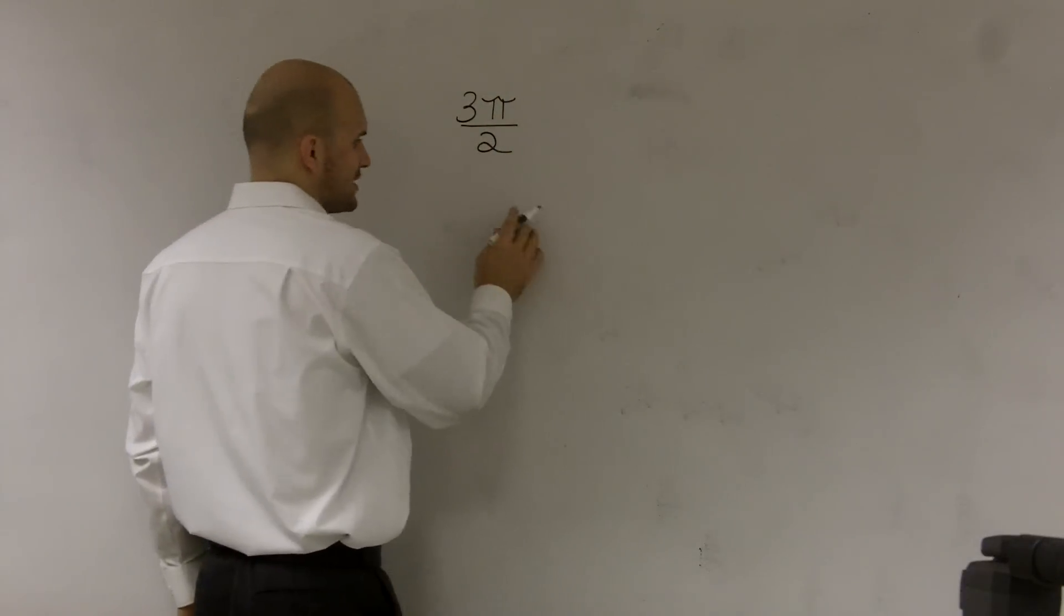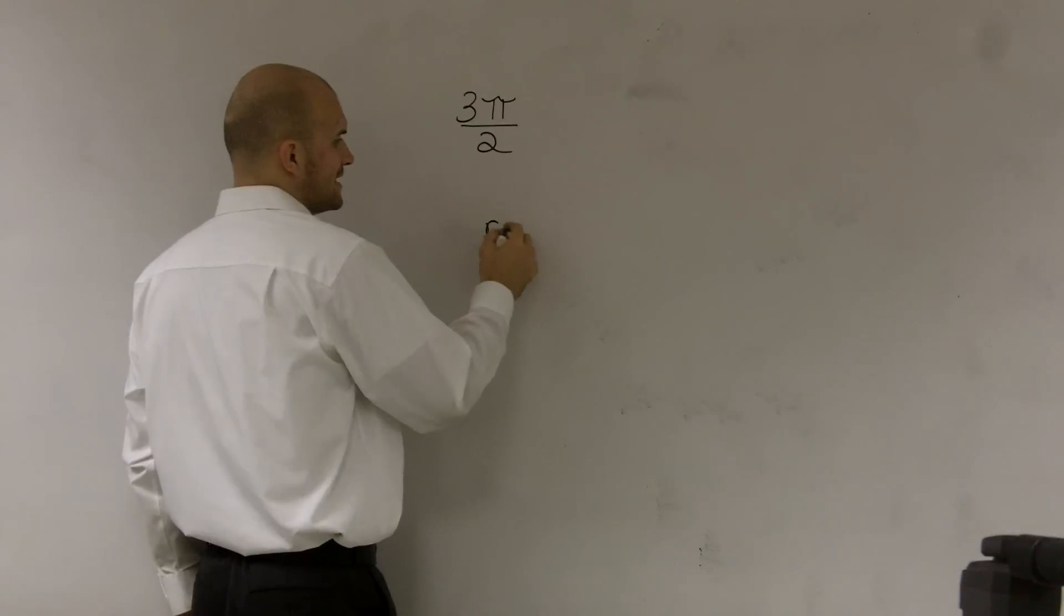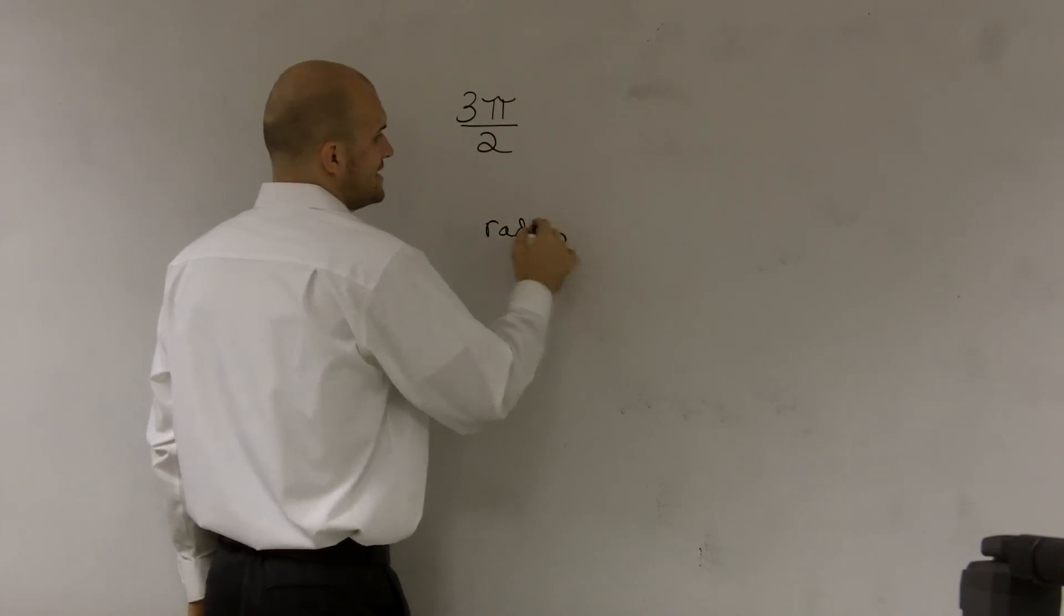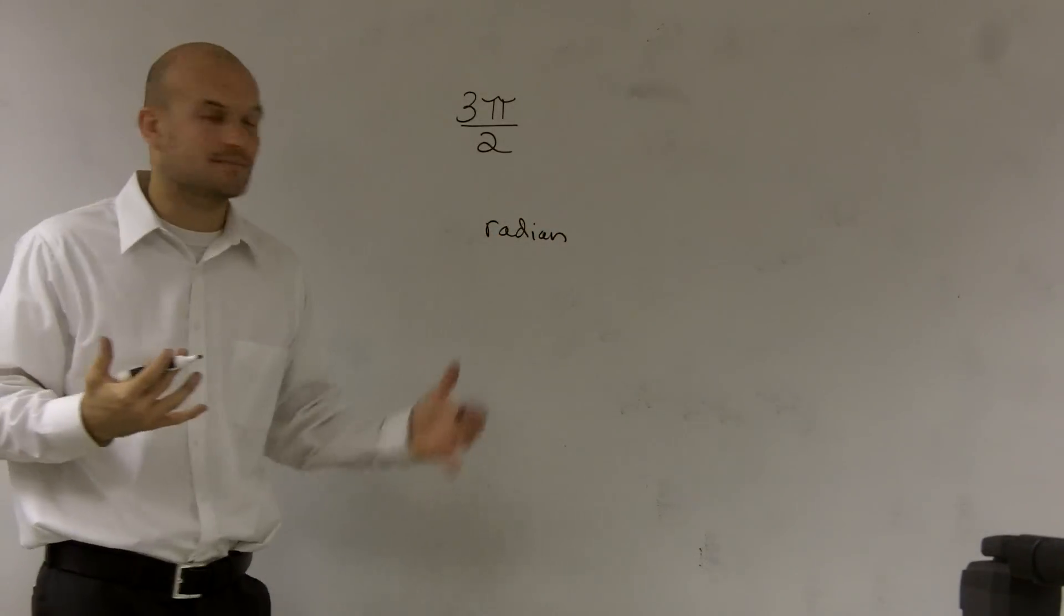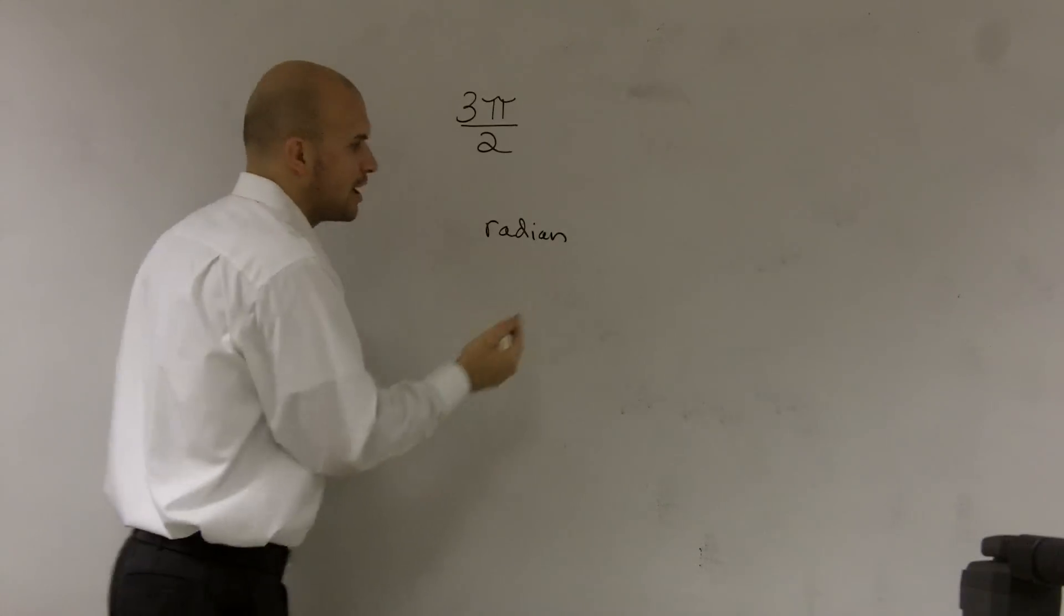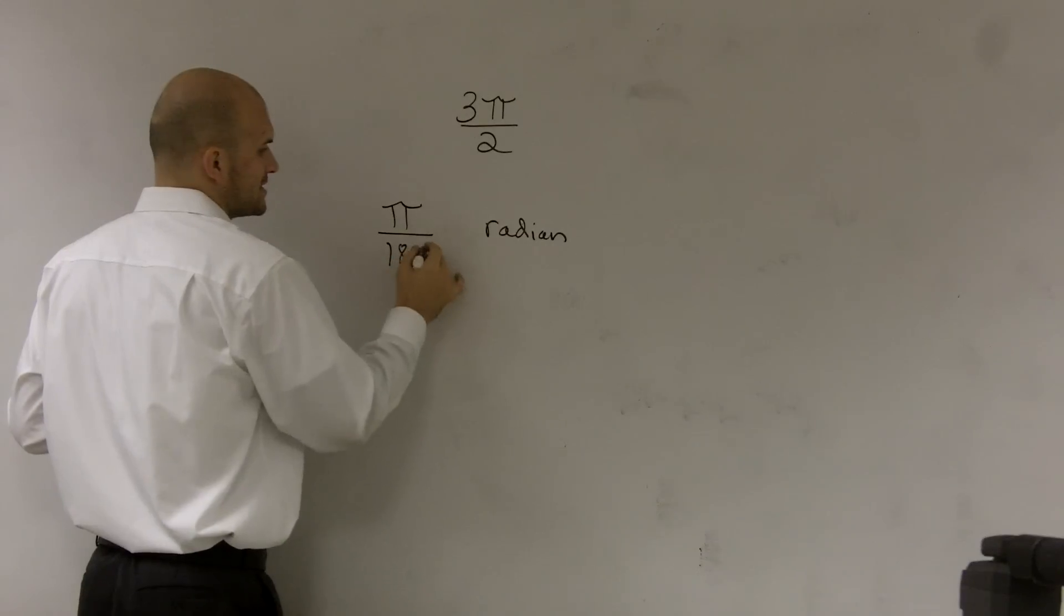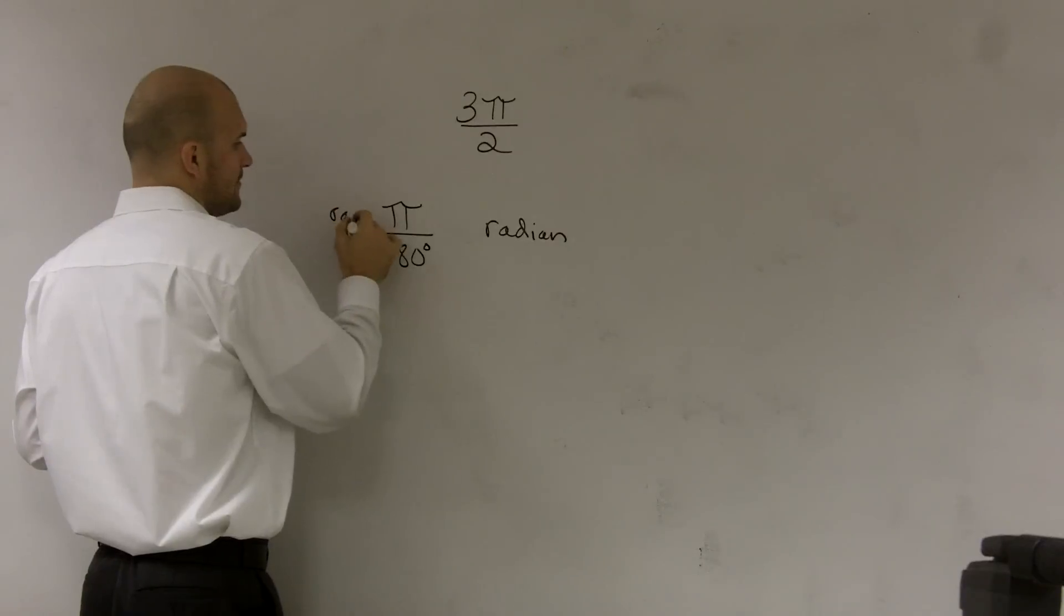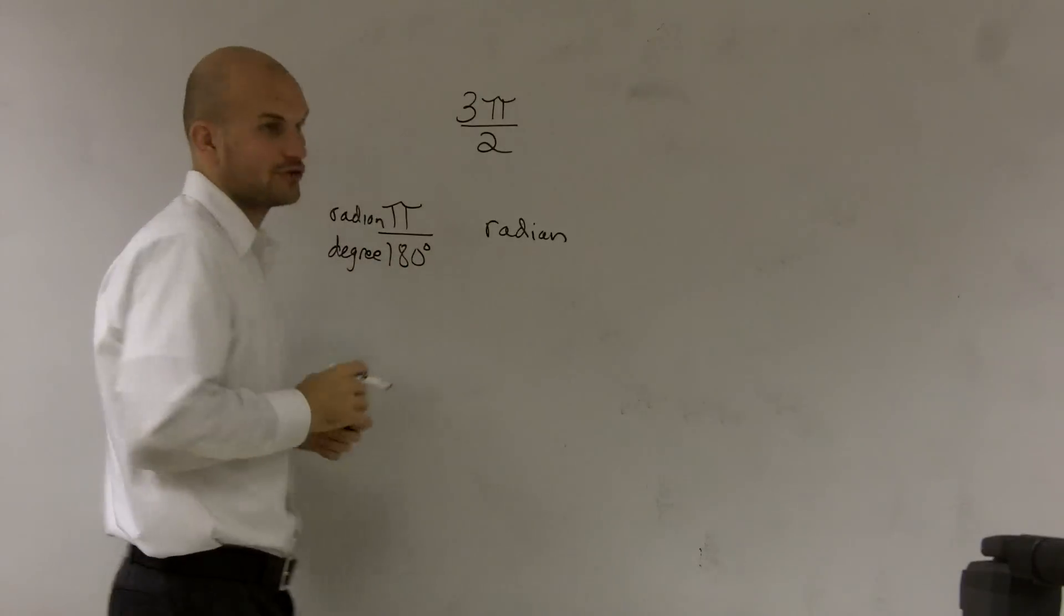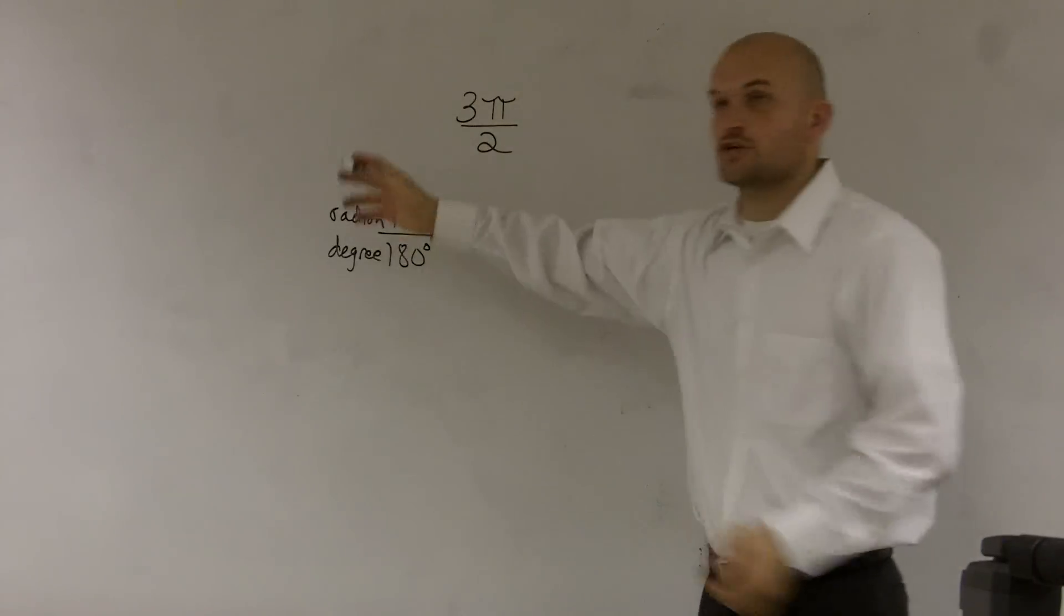So if I was going to go back and use my, if this is in radians, I need to remember, how can I write my—if I say, remember my ratio previously was π is to 180 degrees, where our radian was over the degree, right? And that worked because our degrees canceled out.